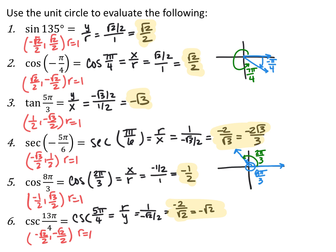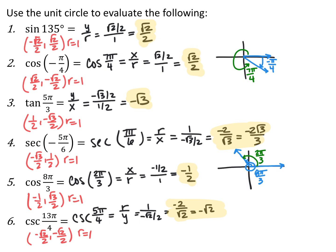For angles larger than 2 pi, subtract full revolutions to find the equivalent location. 8 pi over 3 goes all the way around once (6 pi over 3) and then another 2 pi over 3, sharing the location of 2 pi over 3 at (negative 1 half, root 3 over 2). So cosine of 8 pi over 3 equals negative 1 half. For 13 pi over 4, subtract 8 pi over 4 and get 5 pi over 4 in Q3 at (negative root 2 over 2, negative root 2 over 2), so cosecant is negative root 2.